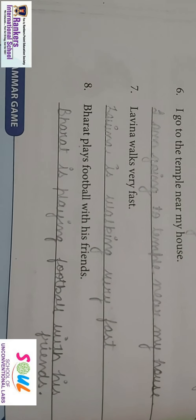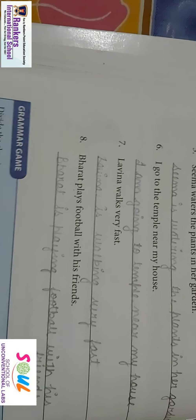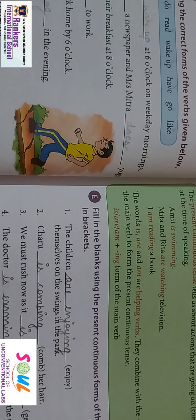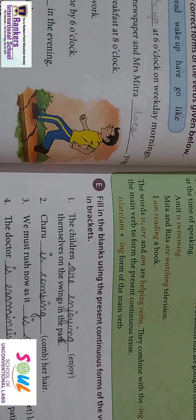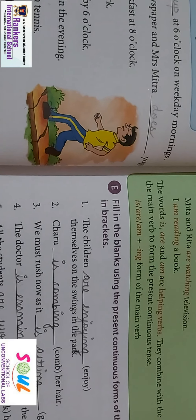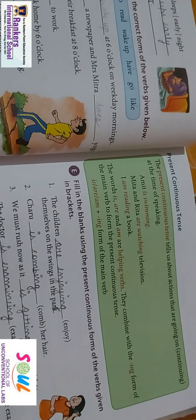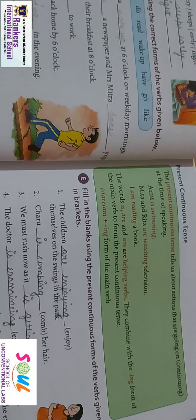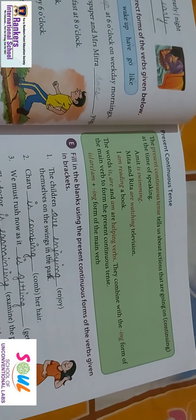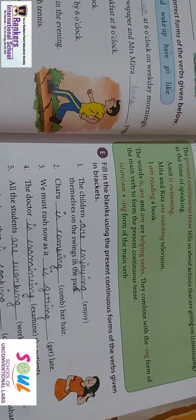So this is how you have to change the present form of sentences into the present continuous tense. You have to use helping verbs: 'is' and 'am' with a singular subject, and 'are' with a plural subject. Plus the main verb, to which you add 'ing'. So this is all for today. I hope it was very learning for you all. Thank you children, have a good day.